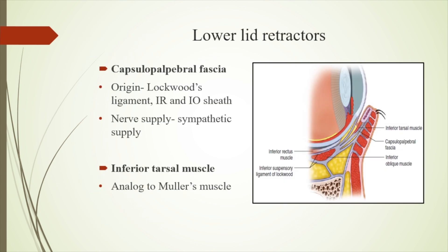The analogous lower lid retractors are the capsulopalpebral fascia, which originates from the Lockwood ligament, inferior rectus, and inferior oblique sheath. It is supplied by the sympathetic supply, and the inferior tarsal muscle is the analog of Muller's muscle. Muller's muscle in the upper lid is also supplied by the sympathetic supply.